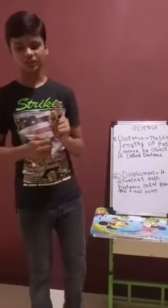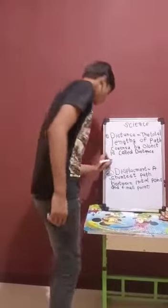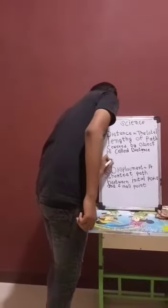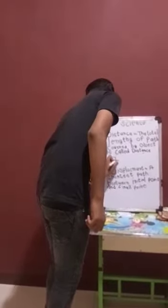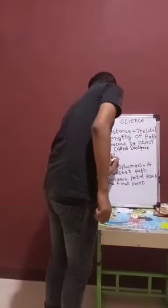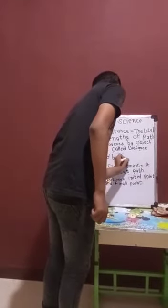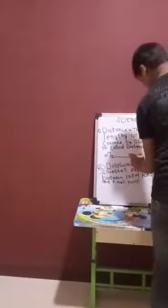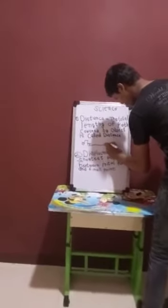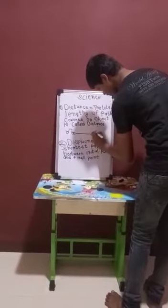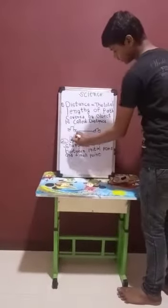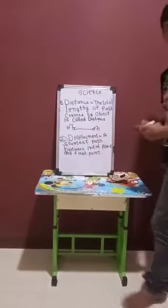Let us understand by one example. So this is the car. The car starts moving and stops at a particular point. The total length covered by the car is called distance.